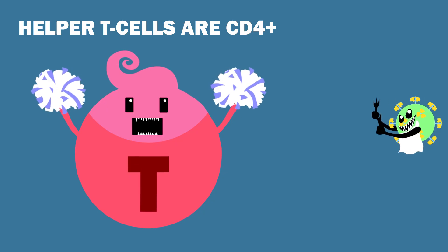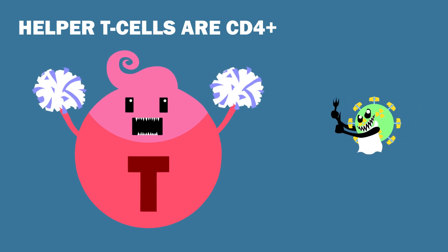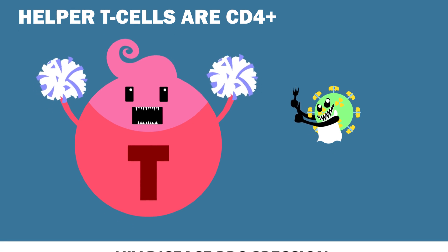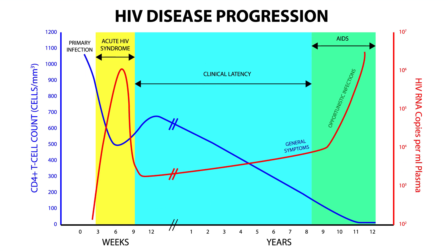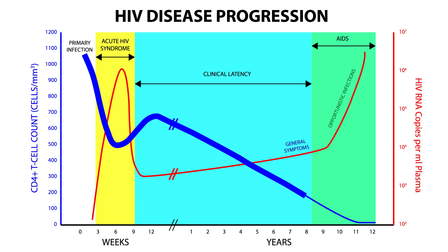Unfortunately, helper T-cells are CD4-positive and the main target of HIV. As the infection progresses, there is a substantial loss of these cells. The immune system fights back by producing more T-cells, some of which differentiate into helper T-cells. This fight for supremacy continues for years, until the virus eventually tips the scales. The body loses its ability to produce T-cells, and even the weakest pathogens become problematic.